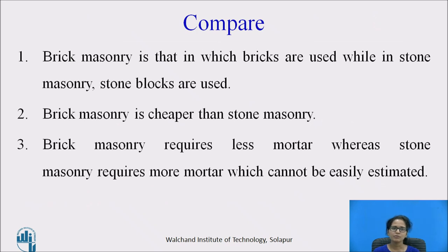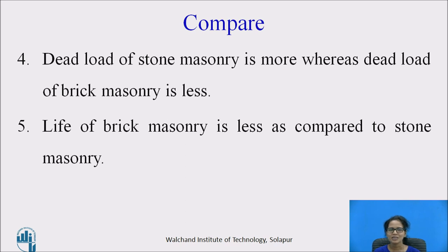Here is the comparison between brick masonry and stone masonry. Brick masonry uses bricks whereas stone masonry uses stone blocks. Brick masonry is cheaper than stone masonry because bricks can easily be lifted on site, whereas stones require more labor and skill for lifting. Brick masonry requires less mortar, whereas the mortar quantity in stone masonry cannot be easily estimated. The dead load of stone masonry is more whereas that of brick masonry is less. The life of brick masonry is less compared to stone masonry.